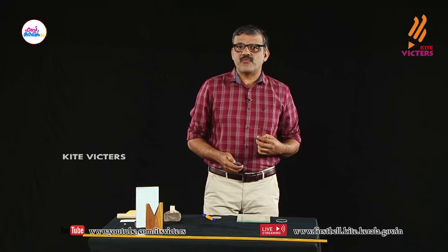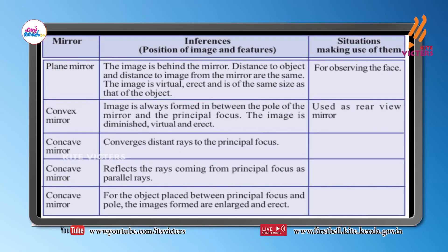Different types of images are formed by a concave mirror, so it can be used in different situations. A concave mirror converges distant rays — parallel to the principal axis — to the principal focus. Using this feature, we can use a concave mirror as the head mirror of an ENT doctor.